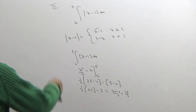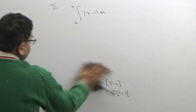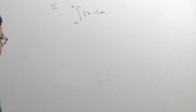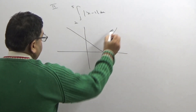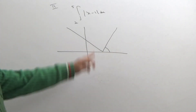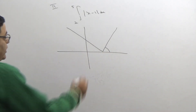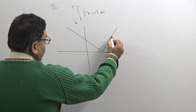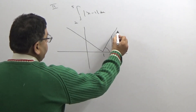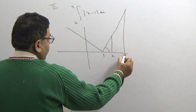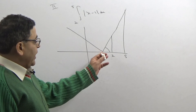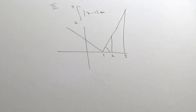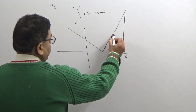Now we will solve this by our own analytical method. We make a graph of |x−1|, which makes an acute angle with the x-axis. Here the critical point is 1, which is outside the interval [2, 5]. We get two right-angle triangles — one shorter and one bigger. We subtract the area of the shorter right-angle triangle from the bigger right-angle triangle to find the required area between 2 and 5.